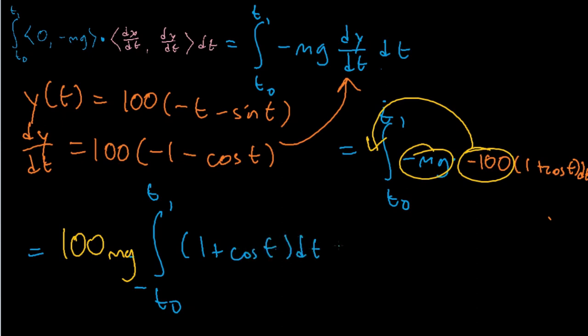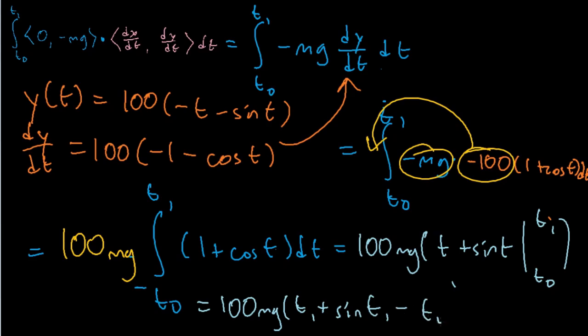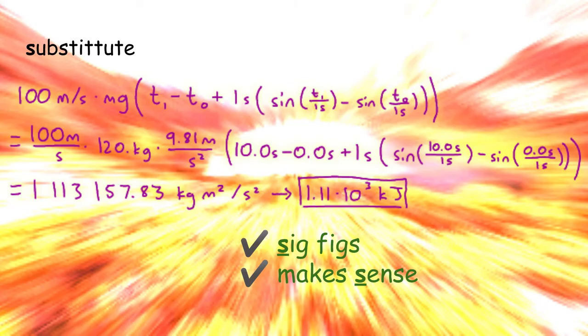And the rest of this should be trivial for a calculus student. We can just plug in the given values and it seems that the earth has done 1.1 times 10 to the third kilojoules of work on the sheep. The sig figs are correct, and the answer makes sense. I hope this added knowledge on line integrals will aid you on your journey through life. Thanks.